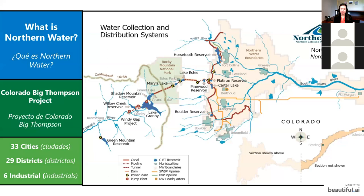Northern Water is in Northern Colorado, and we provide water to 33 different cities, 29 districts, and six industrial water users. This is a map that shows our coverage and our system.